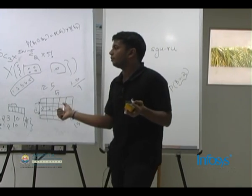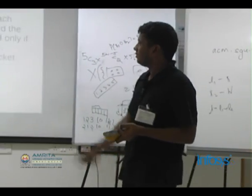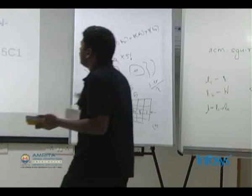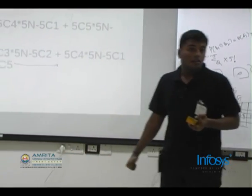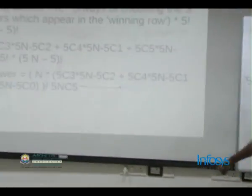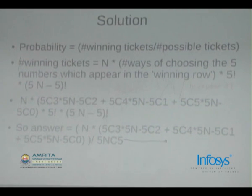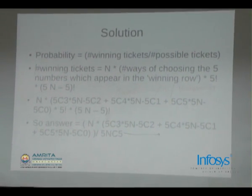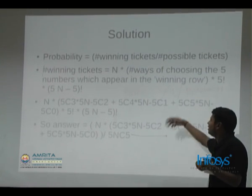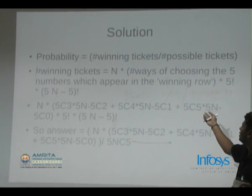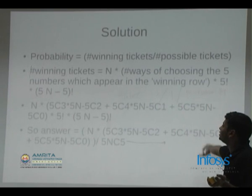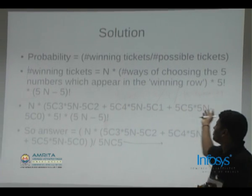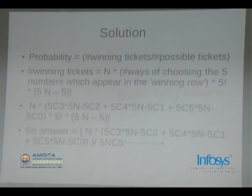The denominator would be (5n)! — that is the total number of tickets. This description is in fact directly from the editorial, and if you look at the editorial you'll find the same words. The n outside is just the number of rows.